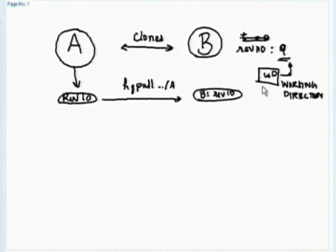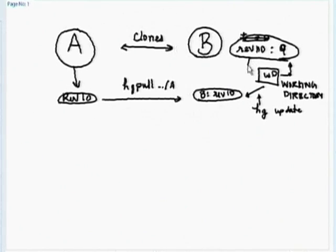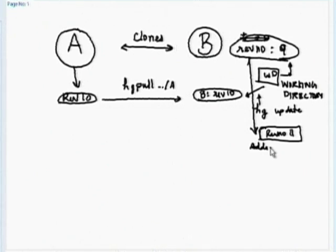To make this point to 10, I must do hg update — I did not do it. So what was happening was B is now stuck in version number 9. What actually happened was I now added a file — from revision number 9 it went off to version number 11, where I had added test.py.